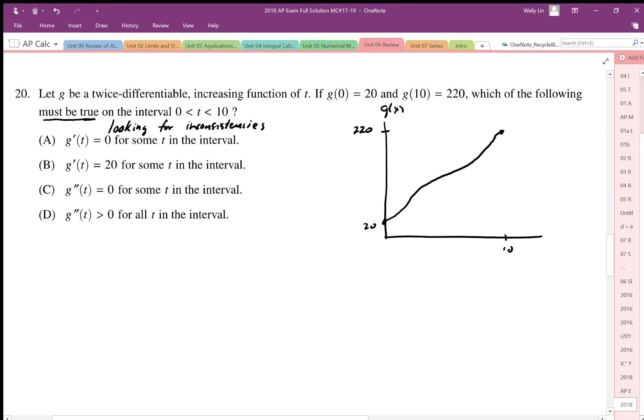I'm going to look for some inconsistency. It says here g prime equals zero for some time interval. Now that could be true, we could have a flat spot on here and still be increasing, however we can easily draw it so it has no flat spots, so this one we have to rule out.